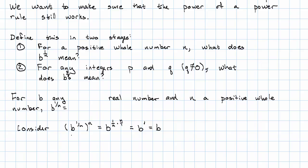b to the 1 over n, I take it to the nth power and I get b. b to the 1 over n is an answer to the question, what number to the nth power gives me b? It must be that b to the 1 over n is the same as the nth root of b.